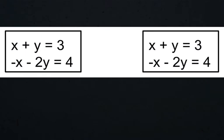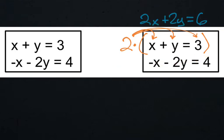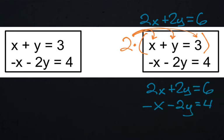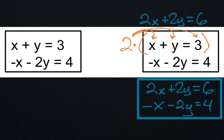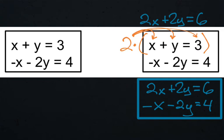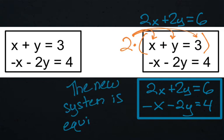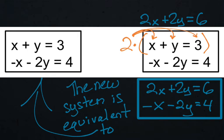Now that we have a basic understanding of equivalent, let's look at some math problems. Here are two systems of equations that are exactly the same, so of course they are equivalent. But let's say I took the first equation in this second system and multiplied it by two, which you are allowed to do. Two times x is 2x, two times y is 2y, and two times three is six. What we have now done is created a new equation in a new system that is equivalent to the one we had at the beginning. The second equation just gets brought down, and the new equation from multiplying by two becomes the new equation in the new system — and this new system is equivalent to the original one.